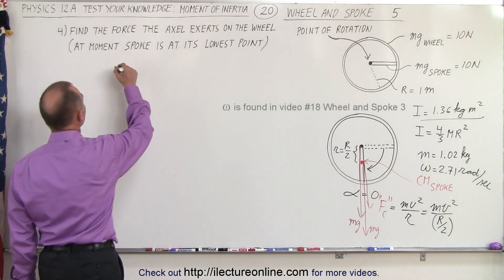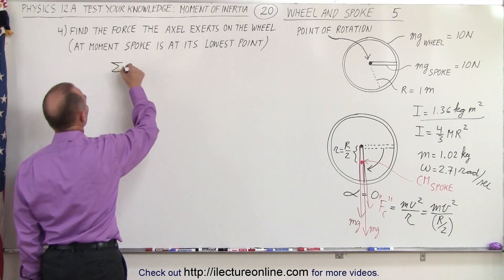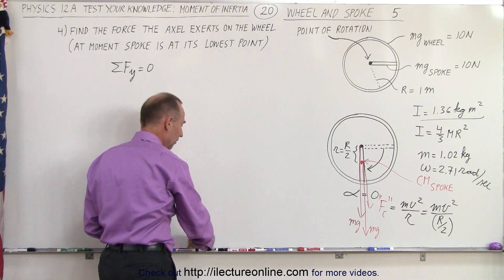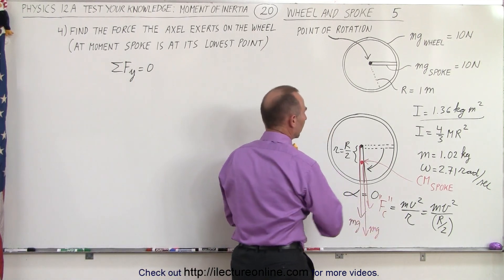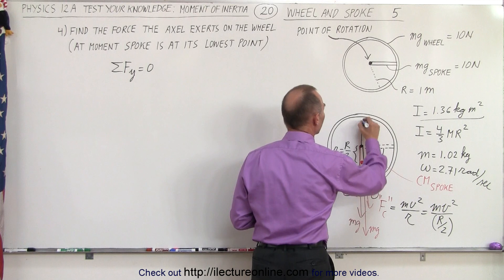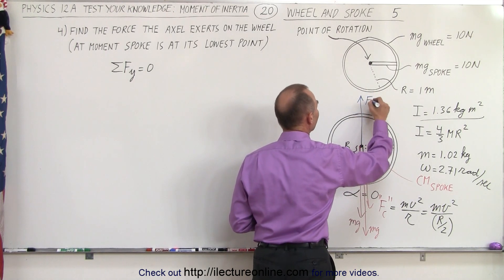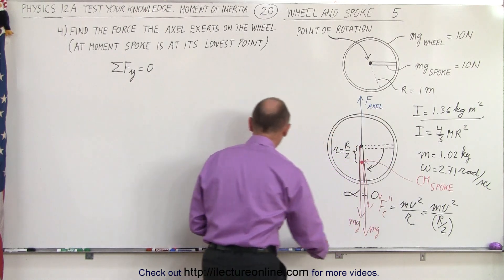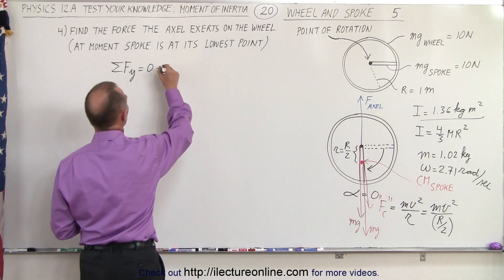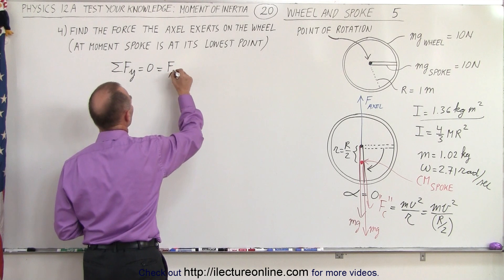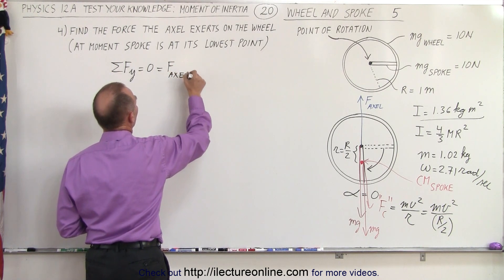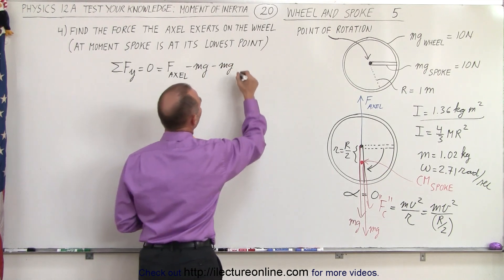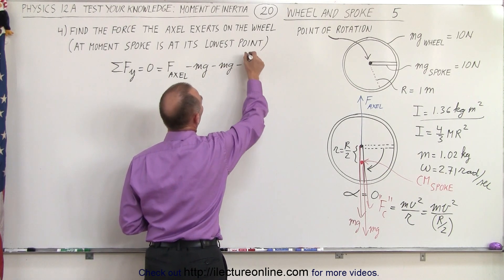Well, we write down that the sum of all the forces in the y direction will be equal to zero. That means we're going to have the force of the axle pushing back on the wheel, so that's a positive F of the axle minus the weight of the wheel minus the weight of the spoke and minus the centrifugal force.